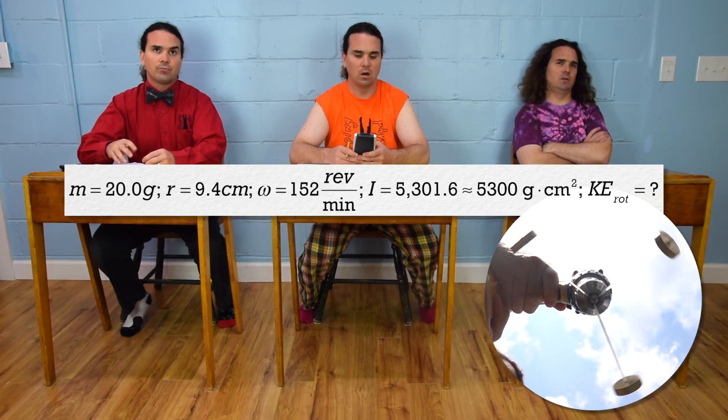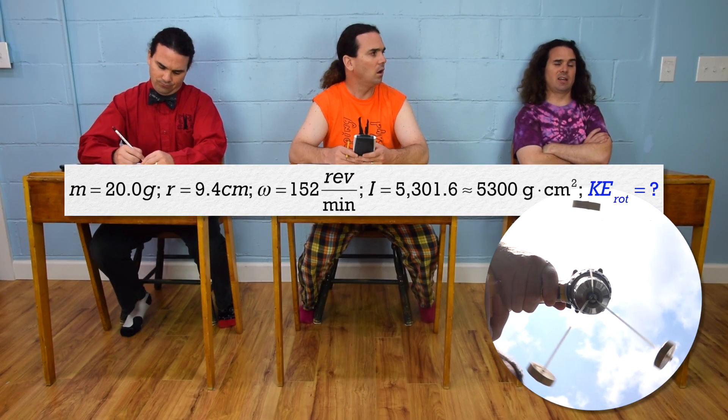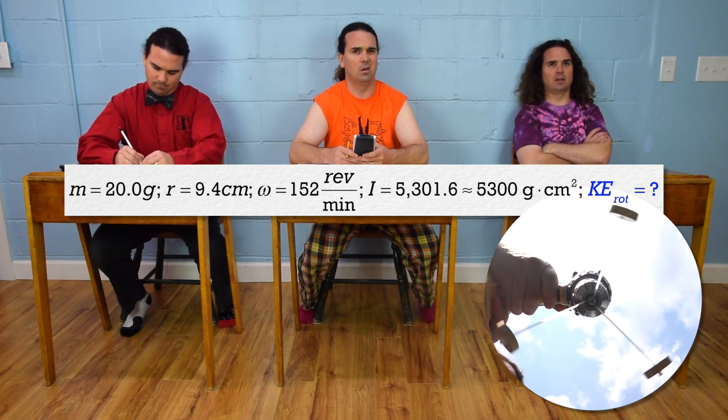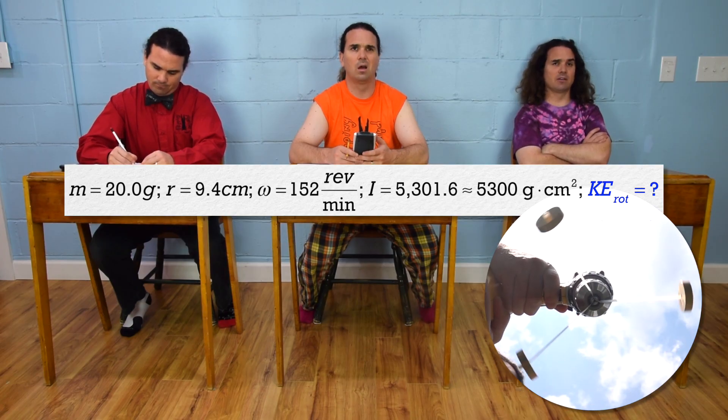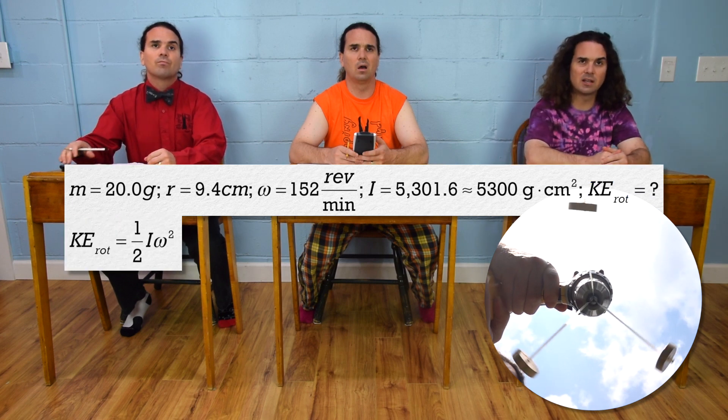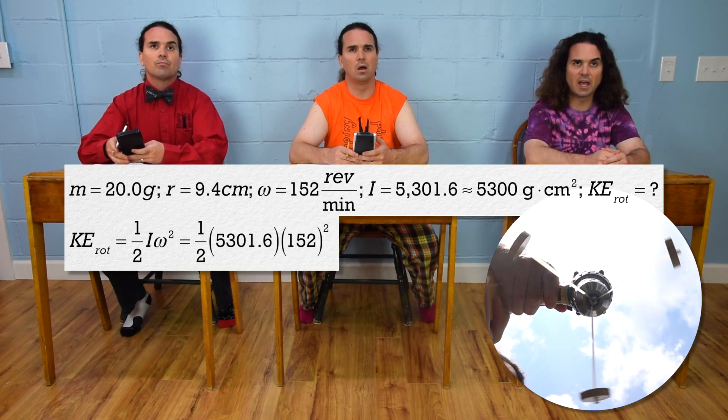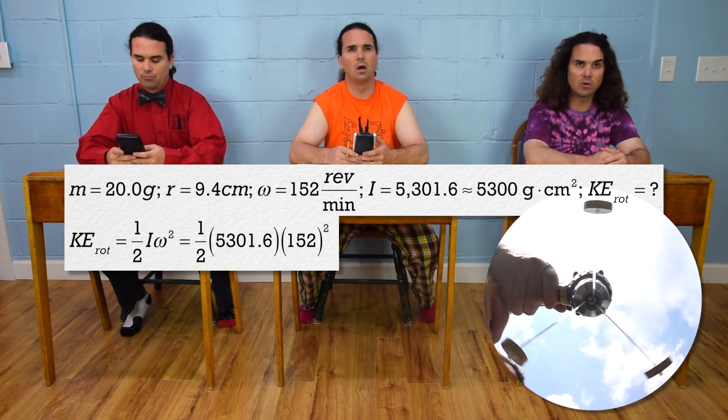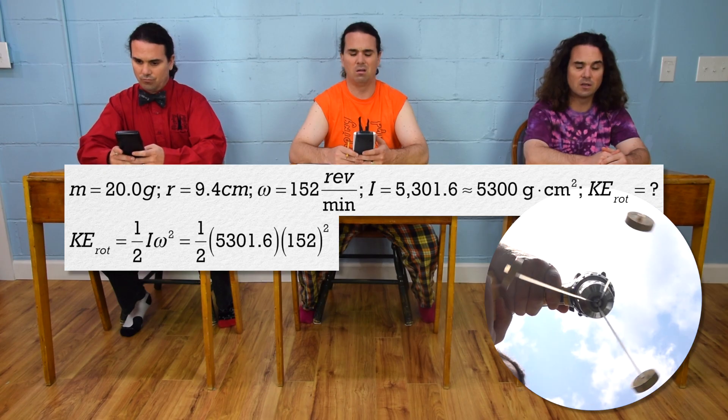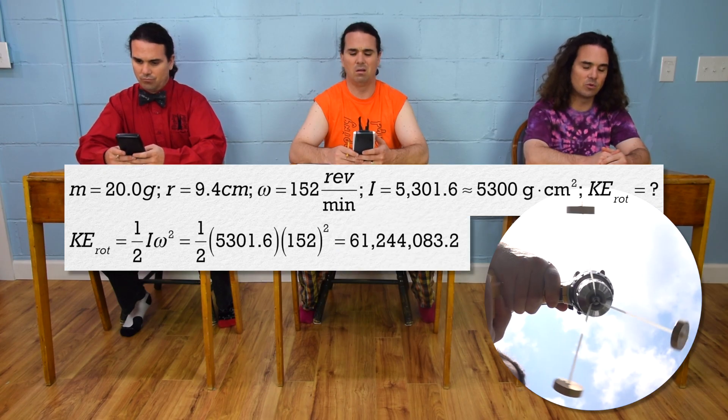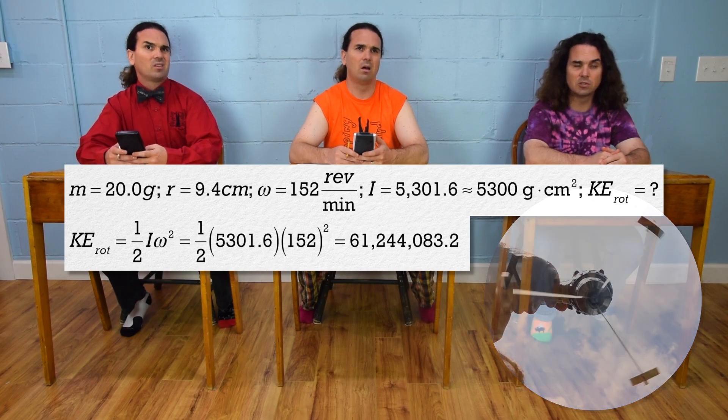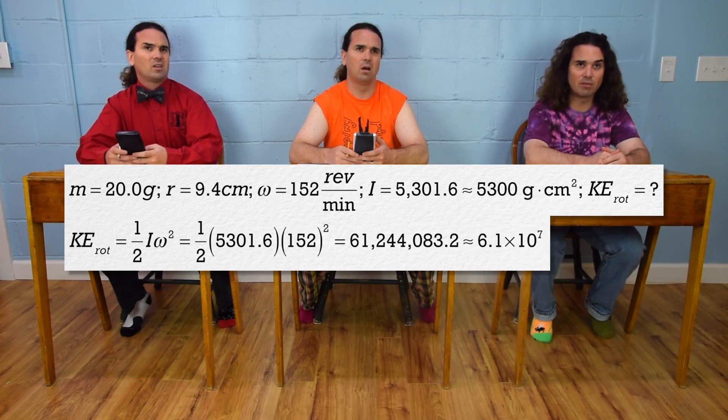Bo, could you please do that? Determine the rotational kinetic energy of the three masses? Yes, that is correct. Okay. Rotational kinetic energy equals one-half moment of inertia times angular velocity squared. So one-half times 5,301.6 times 152 squared, or 61,244,083.2, which is 6.1 times 10 to the 7th.